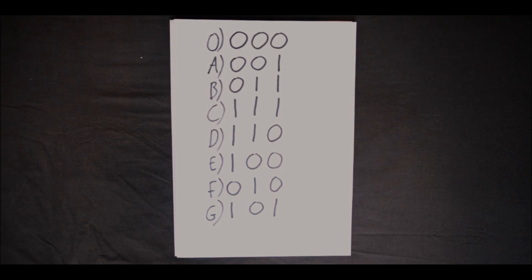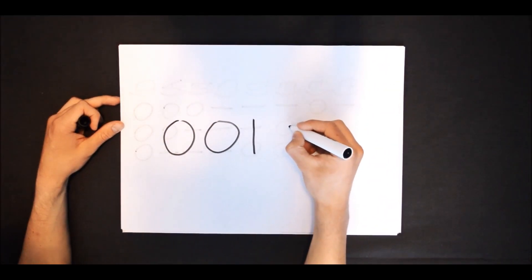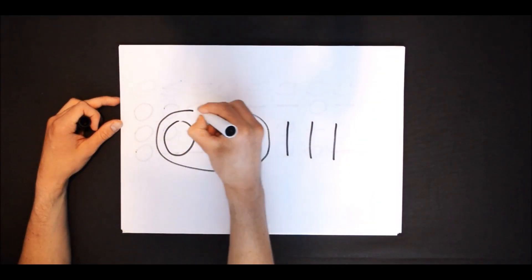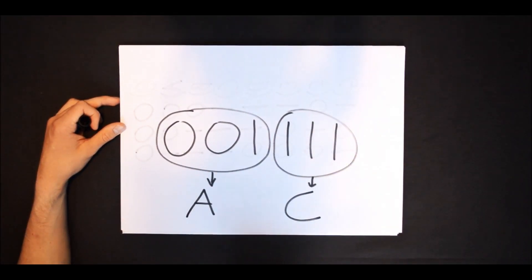Now you have a way of memorizing a set of three binary numbers. For example, let's say you have the binary sequence 001111. If you split that into threes and then refer back to the previous list, you will end up with A followed by C — and therefore to remember a six digit binary number you just have to remember AC.